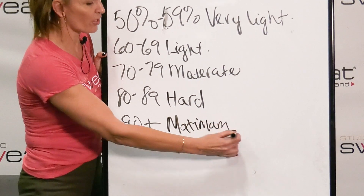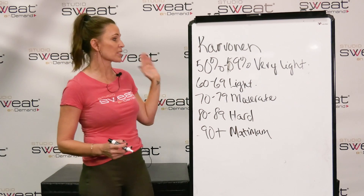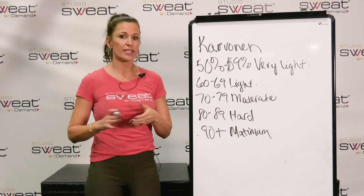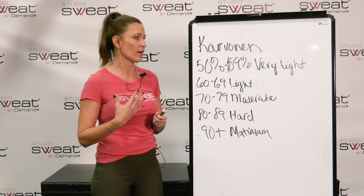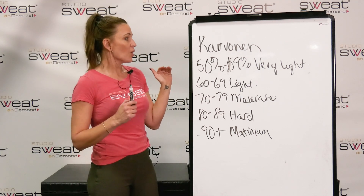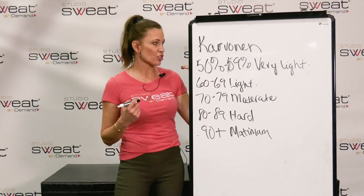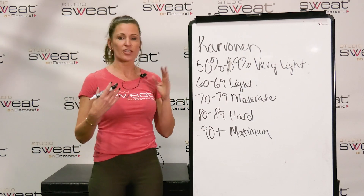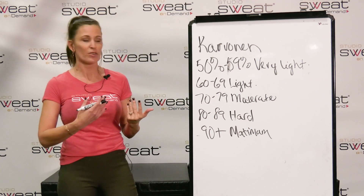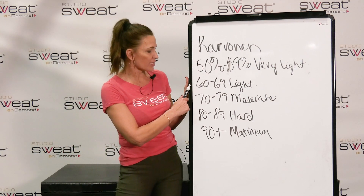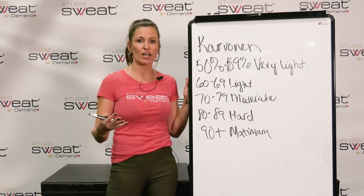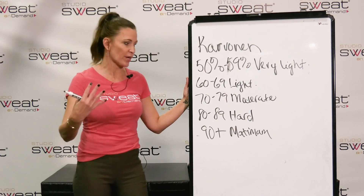Let's talk about how it feels at each of these zones. A lot of you are probably familiar with the talk test, so we'll go there. When you're in zone one — 50 to 59% — it should feel like you can have a very natural conversation without any interruption of your breath. At 60 to 69%, you should still be able to carry on a conversation, but you are aware of your breathing.